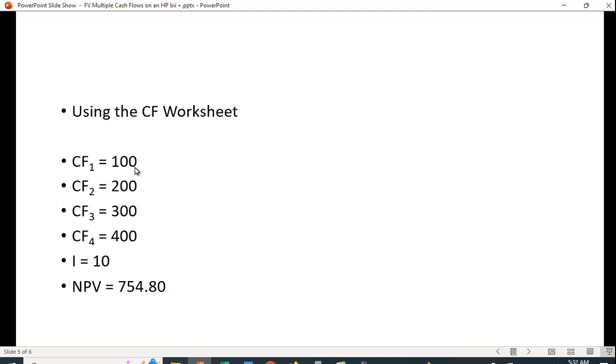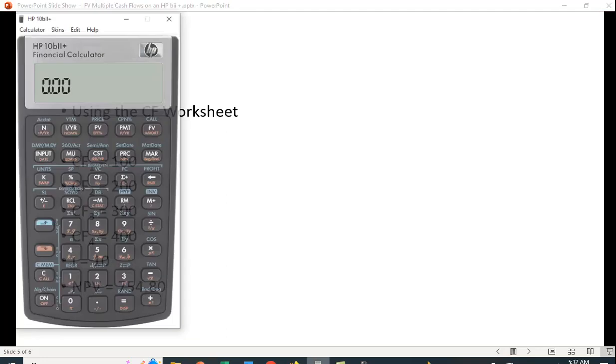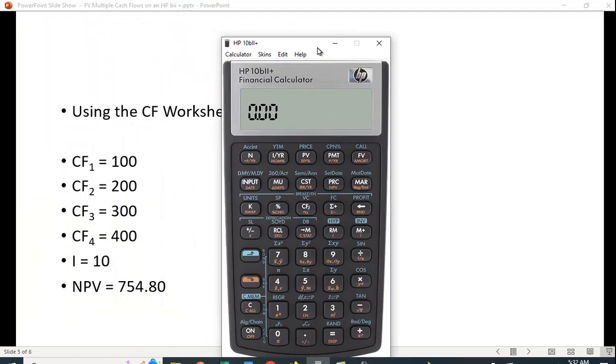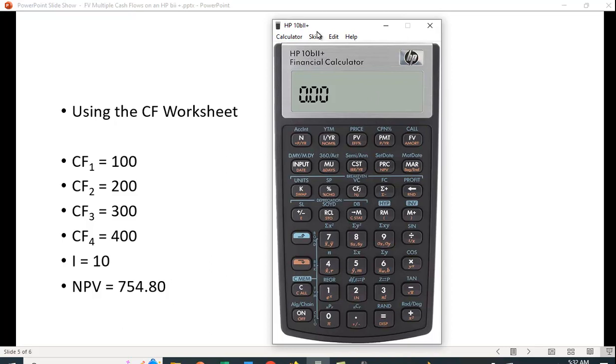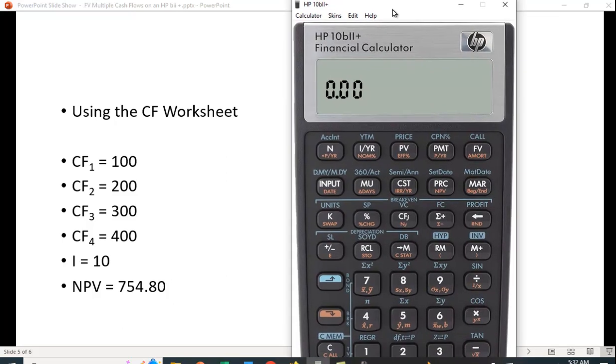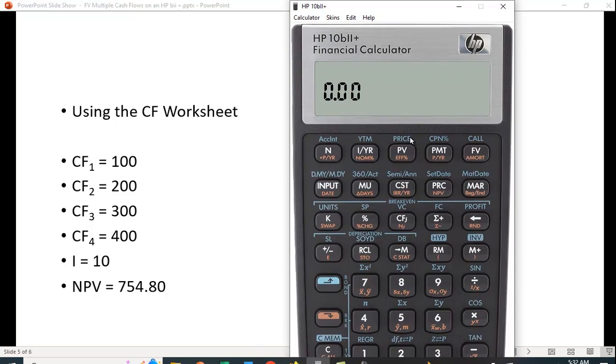So we have cash flows of $100 in year one, $200 in year two, $300 in year three, and $400 in year four, and an interest rate of 10%. So let me call up my calculator here. Actually, let me make this larger so you can see this a little better. It'll cut off the bottom a bit, but that's probably not a problem.